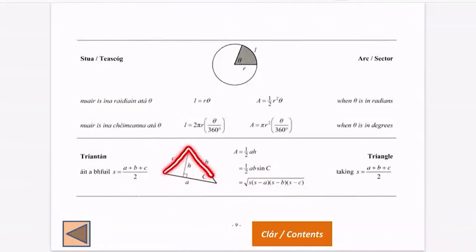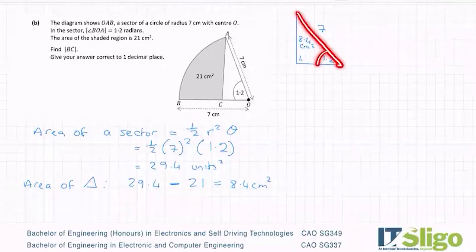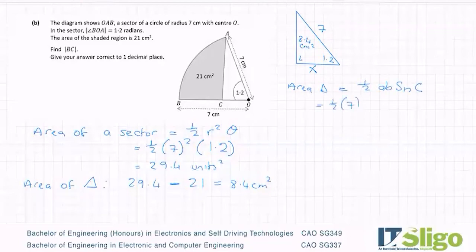1/2·AB·sin C works as follows. If this is going to be my angle, then I have to take the two sides either side of it. When you're using this formula, you have to use what's called the included angle. It's the angle between the two sides that you're taking. So if that's going to be my angle, I'm going to have the length seven and this length down here. I'm going to put an X down there. And now I can say that area of the triangle equals 1/2 of seven by X by sine 1.2, and that equals 8.4.